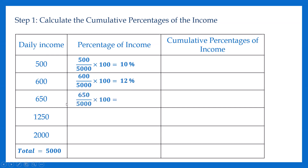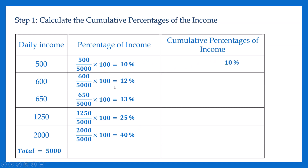The next one is 12%. Then 650 divided by 5000 is 30%. Next, 25% and the final one: 2000 divided by 5000 is 40%. Here are the percentages of income. Then we should get the cumulative percentages. The first cumulative value is 10%. Then 10 plus 12 is 22%. Then 22 plus 13 is 35%. Then 35 plus 25 is 60%. Finally, 60 plus 40 is 100%.